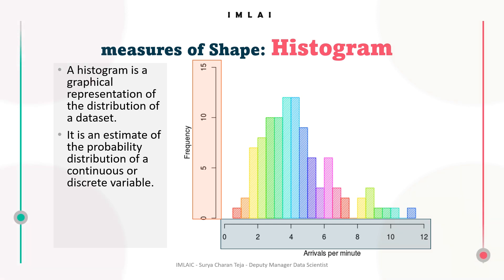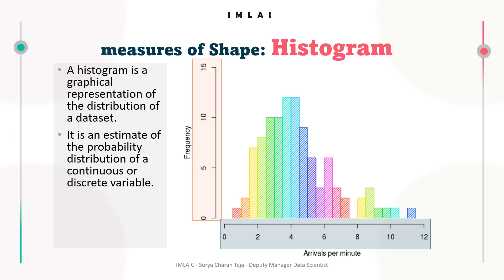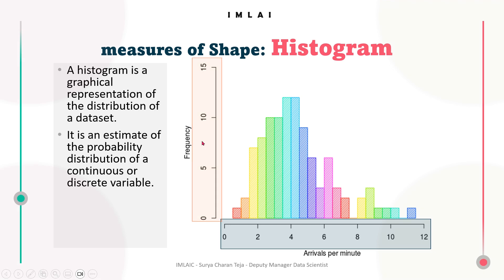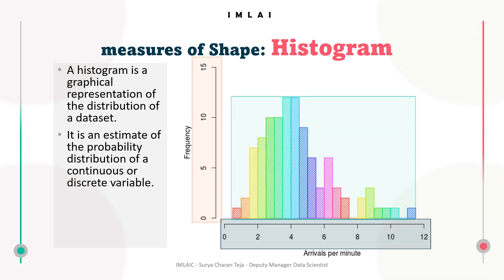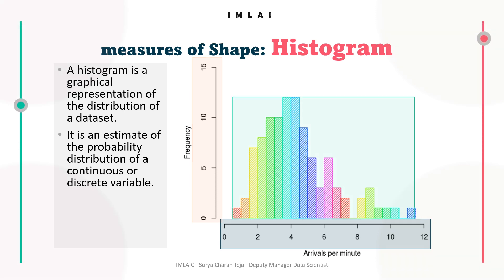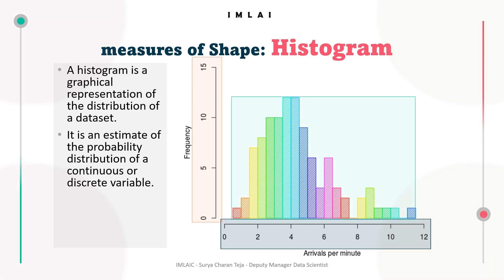The next component is frequency or count. The frequency or count of data points falling into each bin is represented on the y-axis. It shows how many data points fall into each bin, giving an idea of the distribution of the data across the bins. Then, there are bars — the bars in a histogram represent the count or frequency of data points falling into each bin, indicated by the height of each bar.